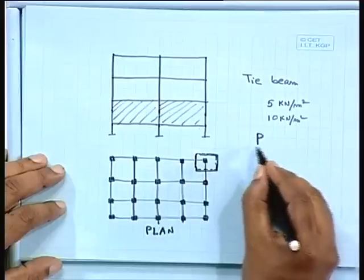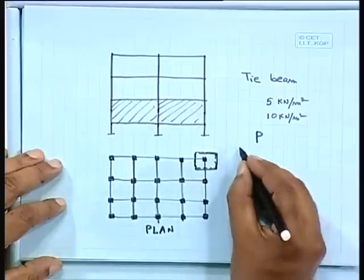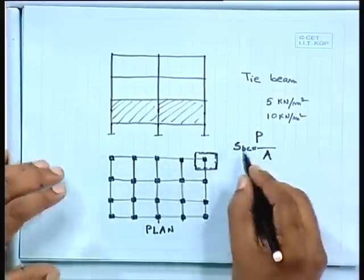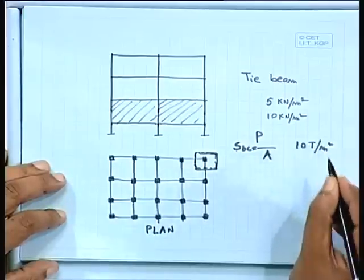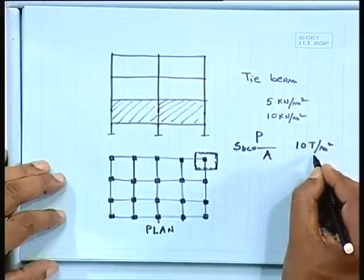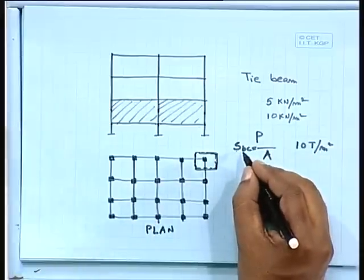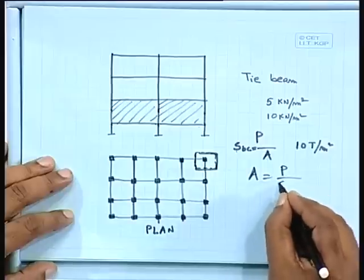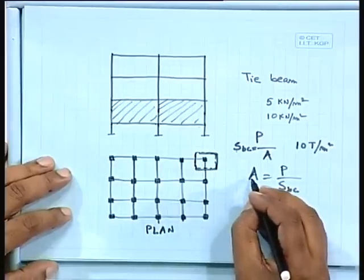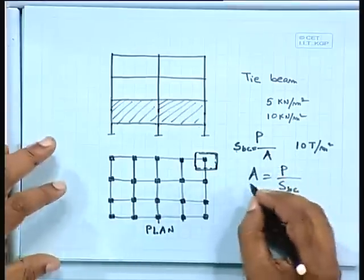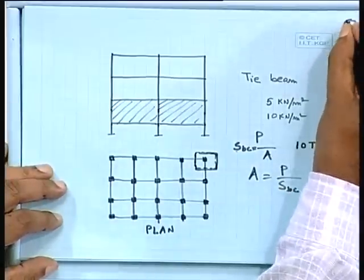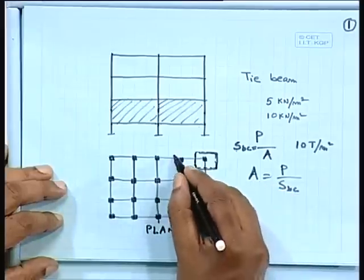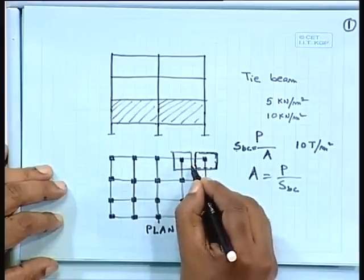If P is the load and SBC is the safe bearing capacity of soil, I can find out P by A, where A is the footing area. So if I know, say, 10 ton per square meter is your bearing capacity of soil, I can find out the area of the footing as equal to P divided by safe bearing capacity of soil. Then we decide whether to provide a rectangular footing or square footing. It may happen that if we consider individual footings, they may overlap — that is also possible.